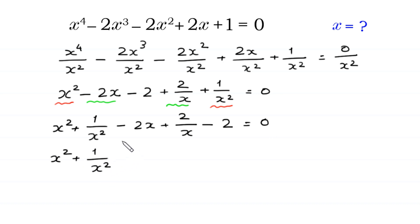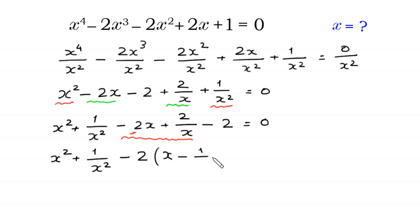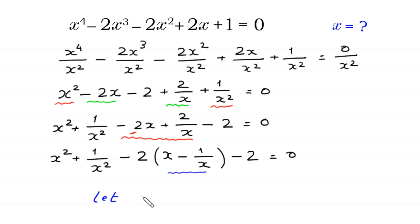From the two terms negative 2x plus 2 over x, we can factor out negative 2 as a common factor, leaving x minus 1 over x in brackets. Now we suppose that x minus 1 over x is equal to y.